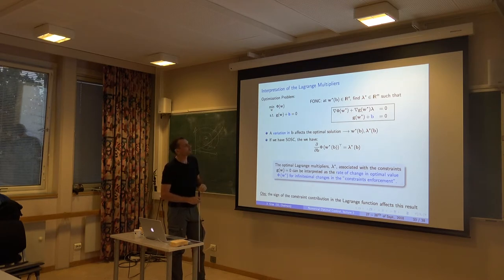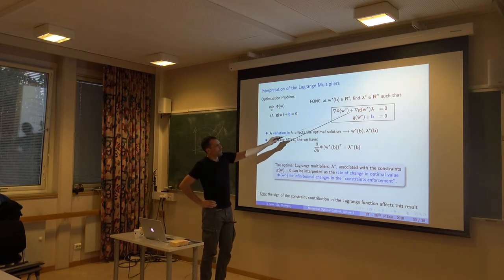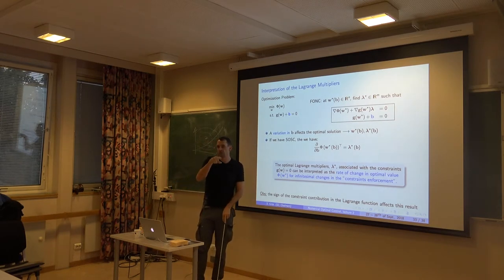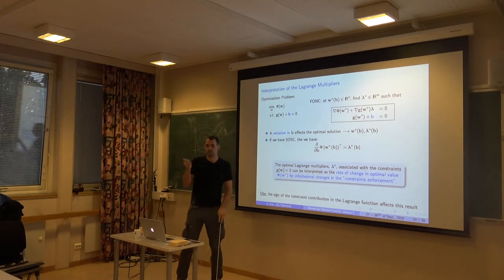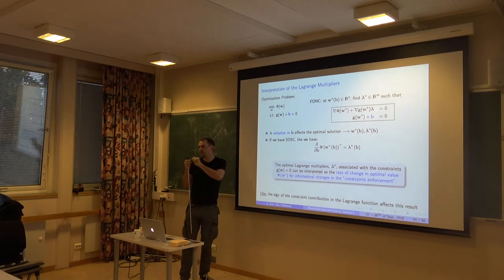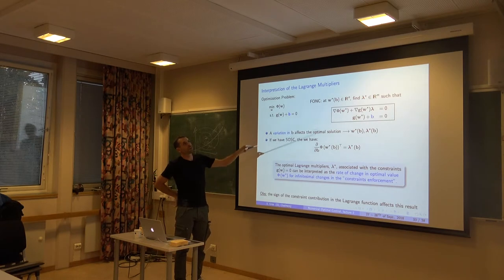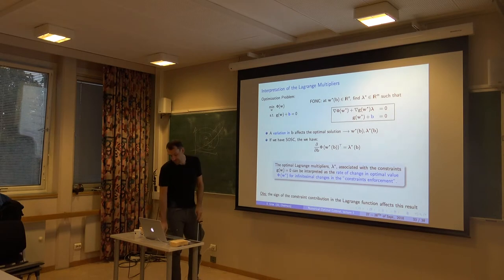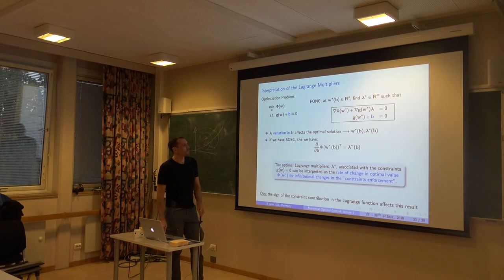One thing I didn't discuss much: when you build a Lagrange function, you can use plus or minus the scalar product — lambda-transpose G can be added with a plus or minus sign. It doesn't change the solution, but it changes signs in a few places in the construction. In convex optimization, people tend to use minus; in non-convex, people tend to use plus. So if you have a doubt with the signs, look very carefully at what you're doing.